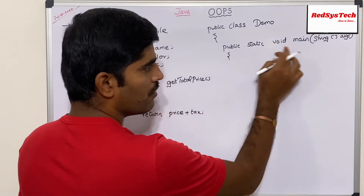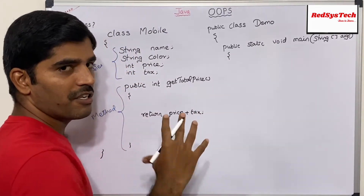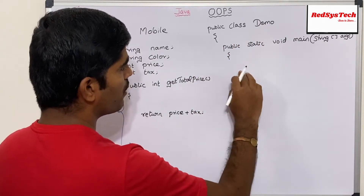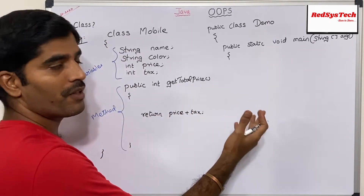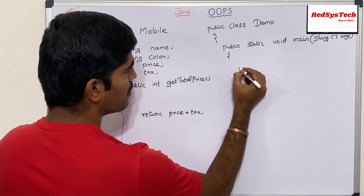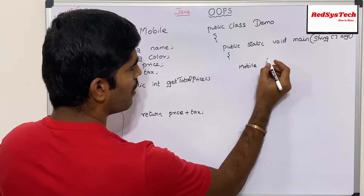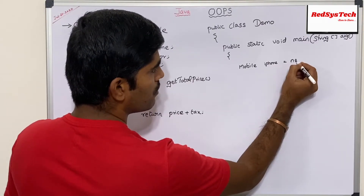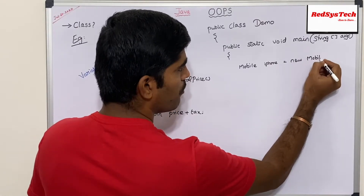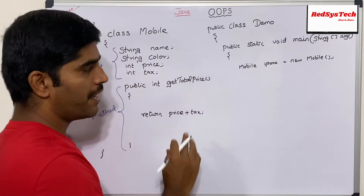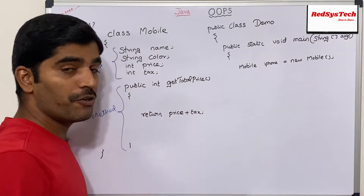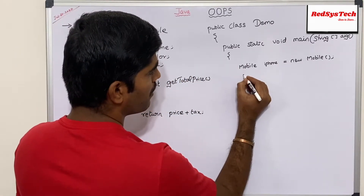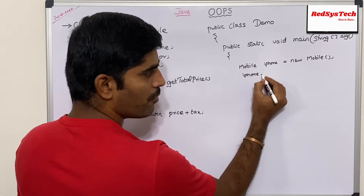Now I'm writing the main method — 'public static void main'. Don't worry about these keywords like public, static, void, main — we have separate videos explaining what each of them means. Now I'm going to call the Mobile class by creating an object. The syntax is: Mobile iphone = new Mobile(); I have a separate video next explaining how this object gets created, but for now we're focusing on the class.